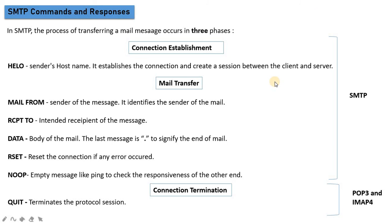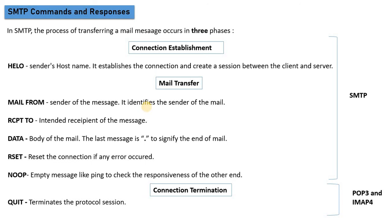SMTP, which we have seen in the last video, is used two times. First for connection establishment — connecting the client to the server, whether it is Gmail or Outlook. And second for mail transfer, where we transfer from a client to an MTA server to another MTA server. So SMTP is used twice in this process.